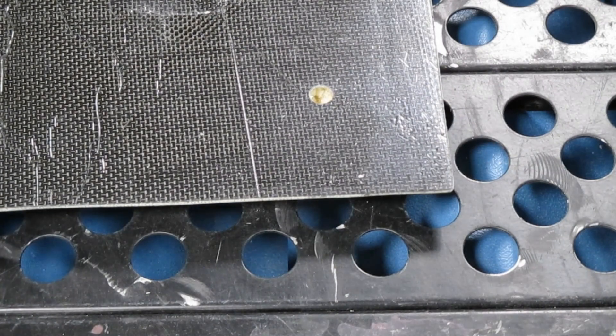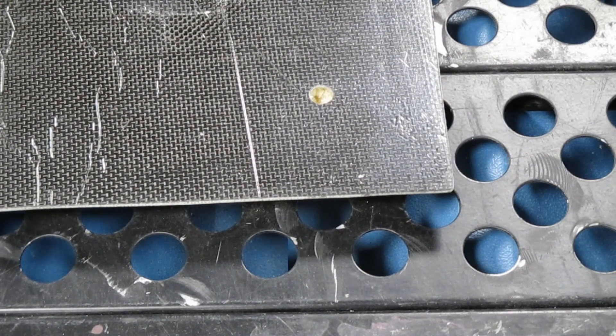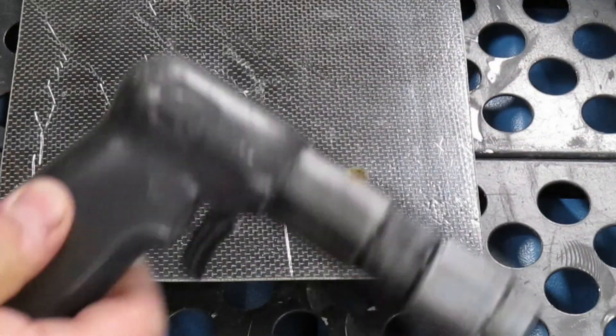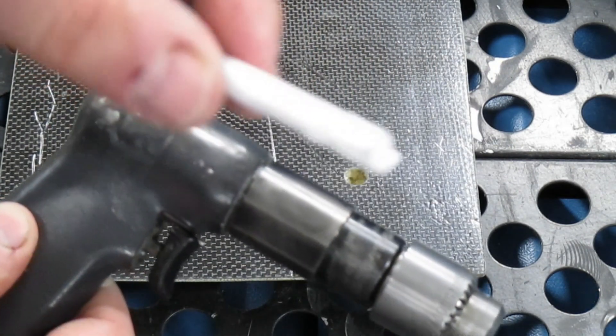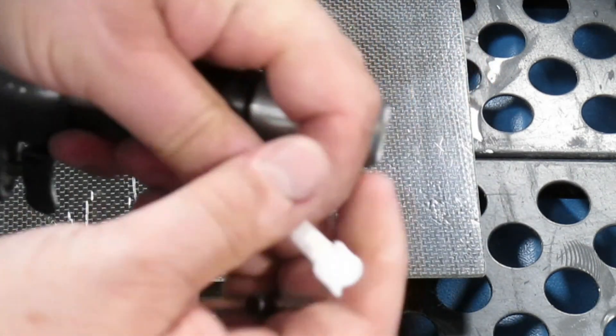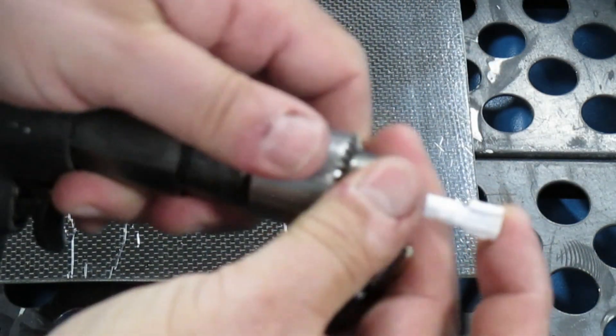Again, notice where we are, we are back at the grinding table downdraft table. Turn it on so we're not making a mess. We've got the cutting tool, so let's put it into the drill and tighten it up.